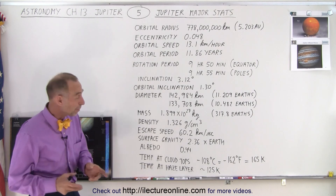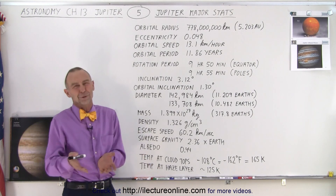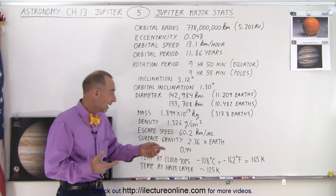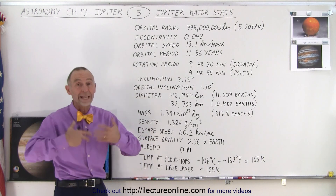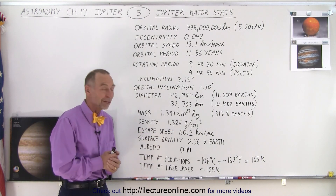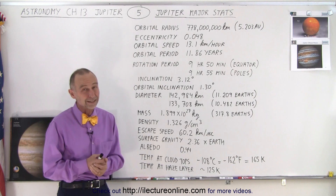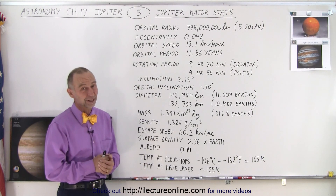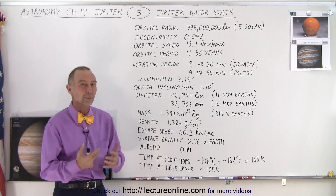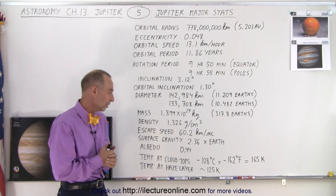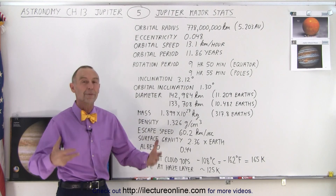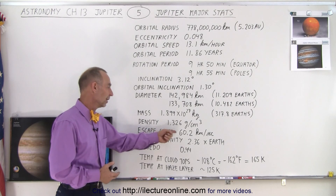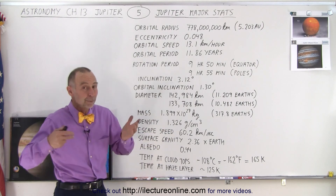The escape speed to get away from the planet — of course you can't land on the planet because there's no solid ground, but hypothetically if you could and then wanted to take off, you would have to reach a speed of 60 kilometers per second, which is more than five times the escape speed on Earth. It would not be possible to get away from the gravitational pull of Jupiter — it is just too big, with too much gravitational force. You would need an enormous amount of fuel; it would be virtually impossible.